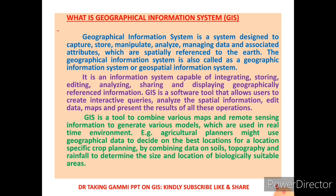The Geographical Information System is also called a geospatial information system. It is an information system capable of integrating, storing, editing, analyzing, sharing, and displaying geographically referenced information. This is a software tool that allows users to create interactive queries, analyze spatial information, edit data maps, and present the results of all these operations.